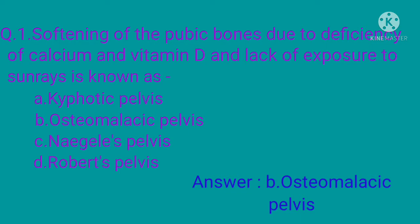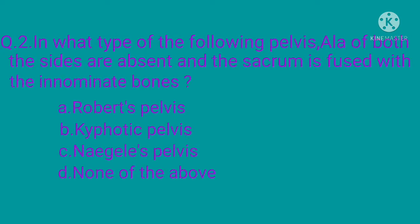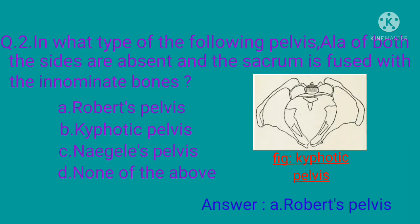Question 2: In what type of the following pelvis are the alae of both sides absent and the sacrum is fused with the innominate bones? Options: option A: Roberts pelvis, option B: kyphotic pelvis, option C: Naegele's pelvis, option D: none of the above. The correct option is option A: Roberts pelvis.